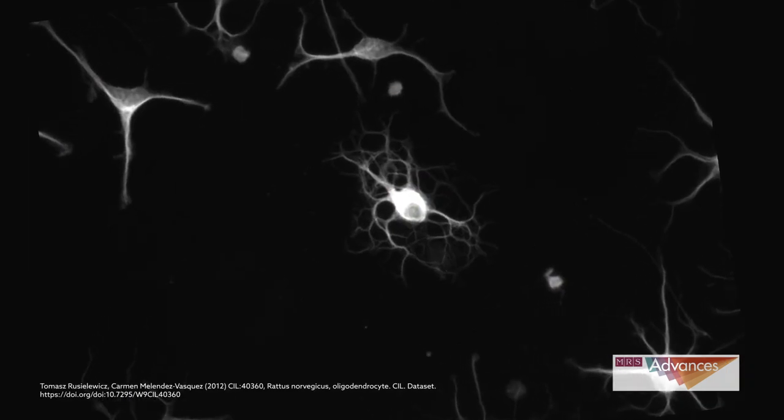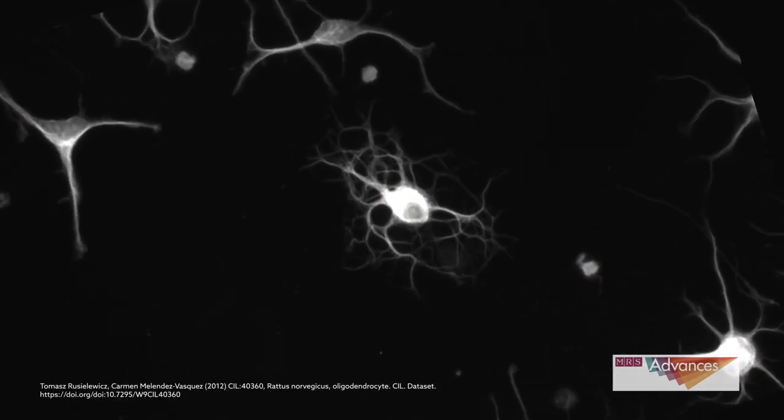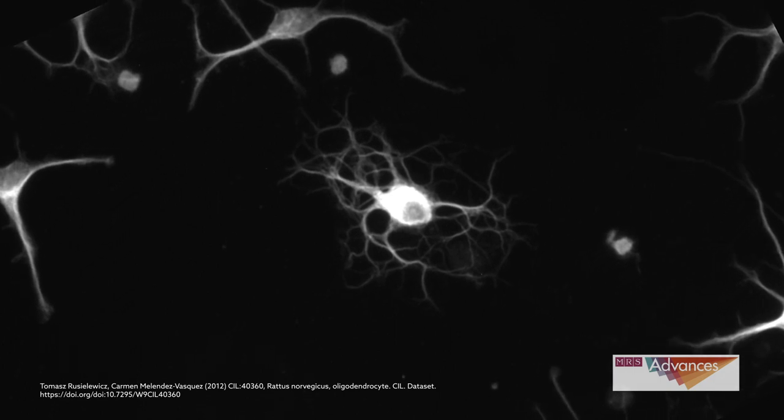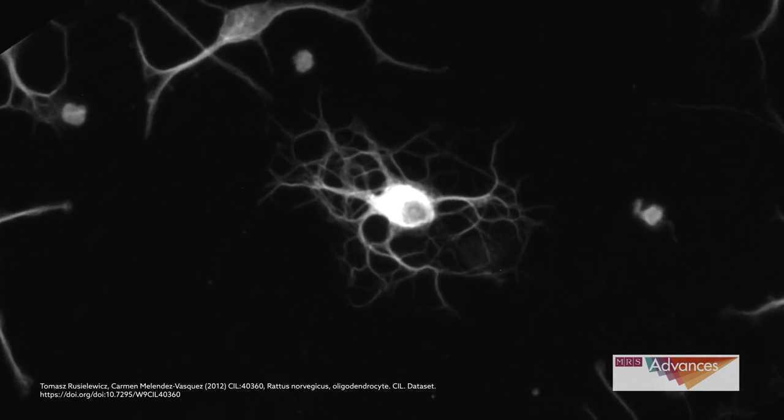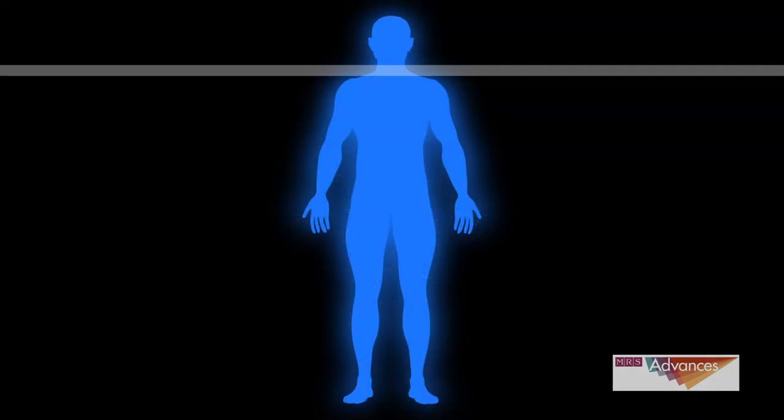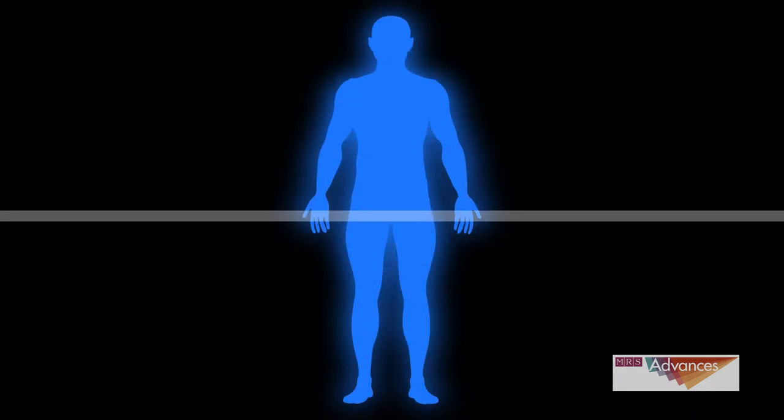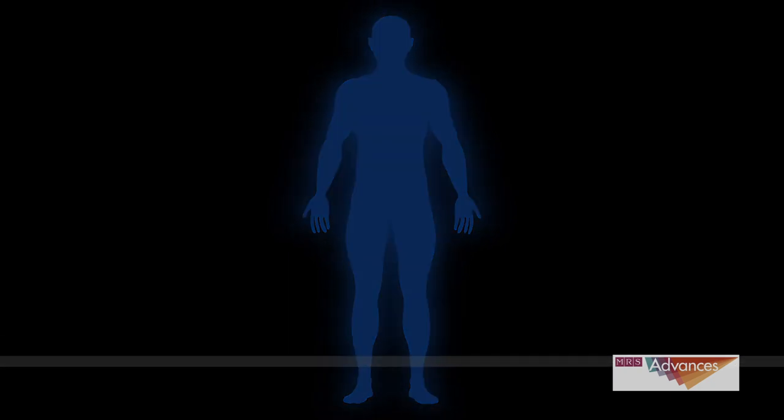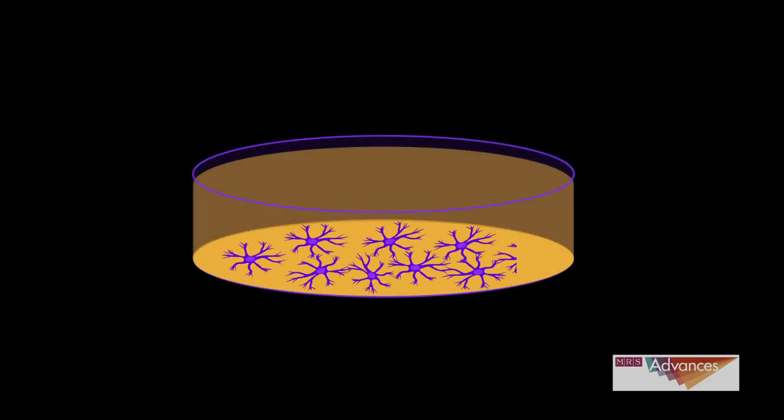While researchers have slowly gained a better understanding of how and why oligodendrocyte function is compromised, collectively that work paints a grainy picture of what's really going on. Not only is it virtually impossible to watch these destructive processes unfold inside the body, but also methods designed to recreate the behavior of these cells in the lab are often too simplistic, offering a 2D view of what is inherently a 3D process.